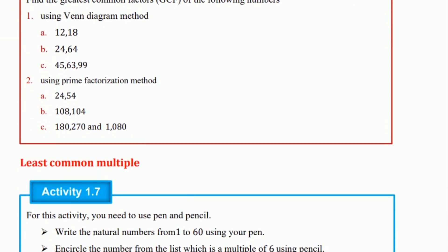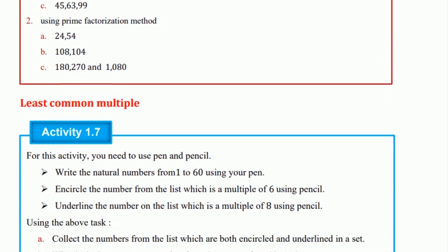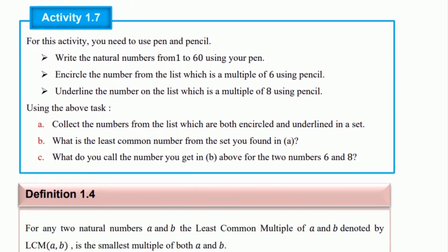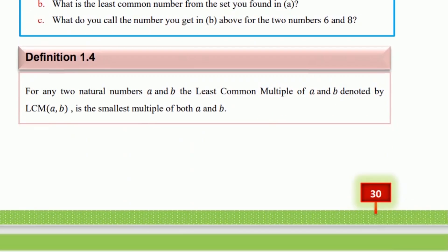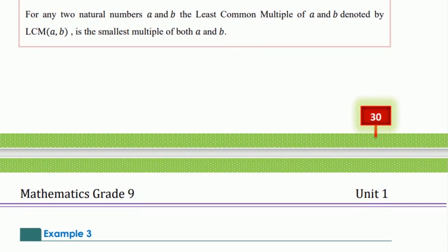Exercise 1.7. The greatest common factor of 12, 18, and 36 is the greatest common factor of 12, 18, and 36.